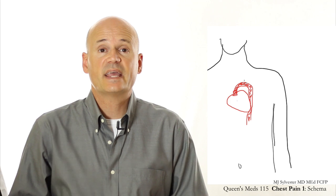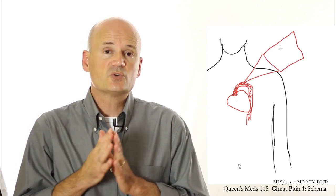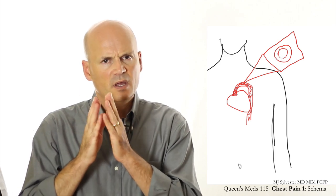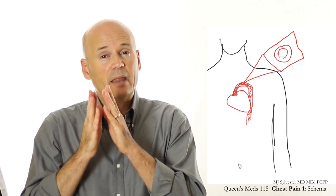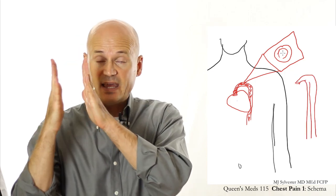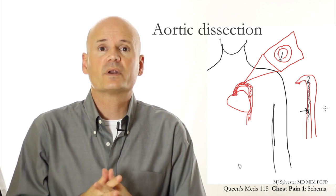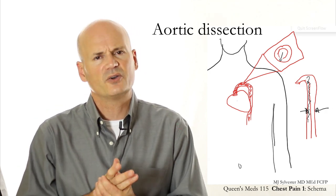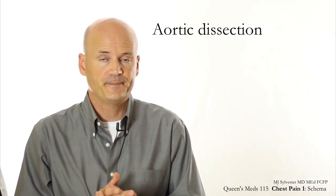Next comes the aorta — the blood vessel that leaves the heart. Visualize the inside lining of that aorta getting split open, with blood forced between the inner layers of the lining, dissecting that lining apart. That's what we call aortic dissection, and it's the second in our list of three killers that are causes of chest pain.